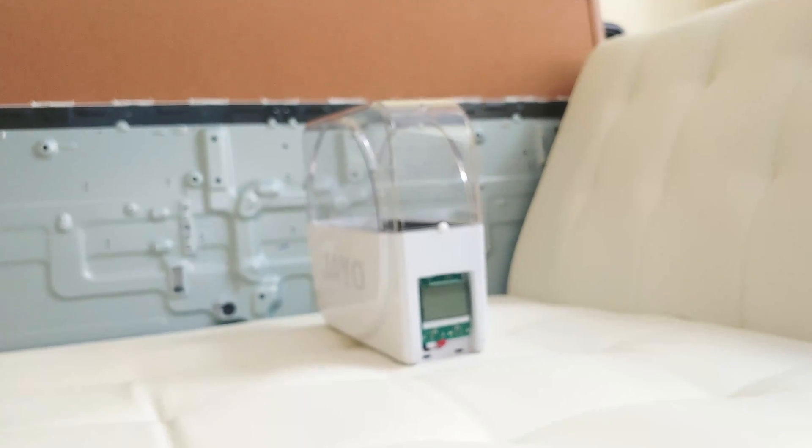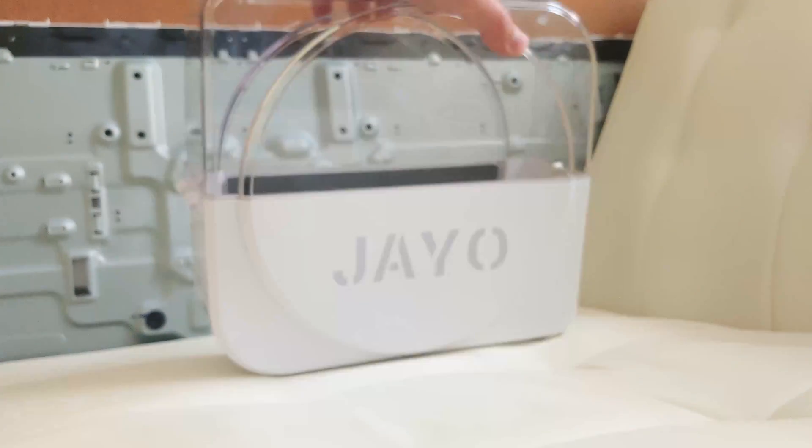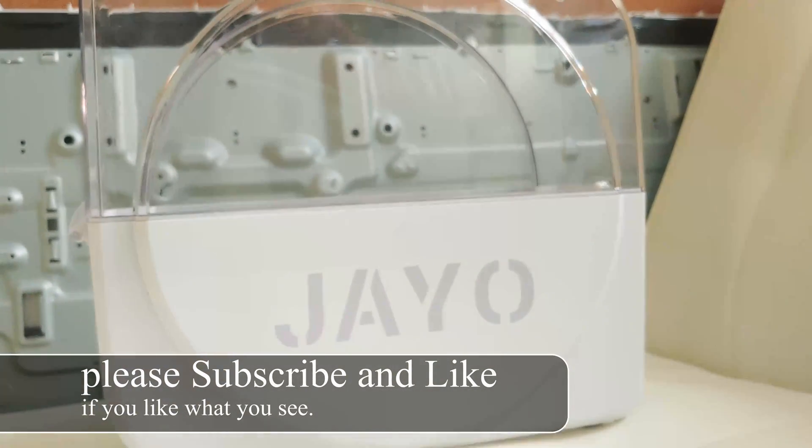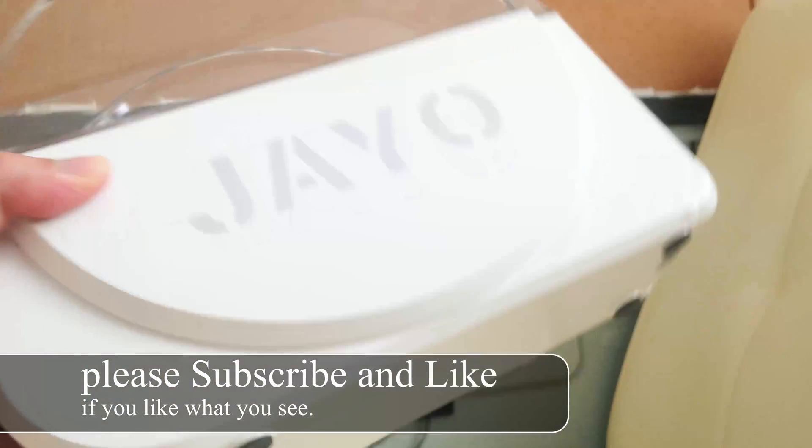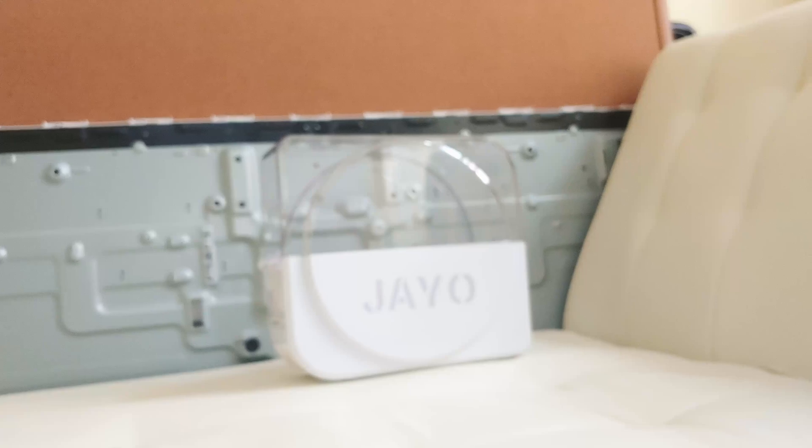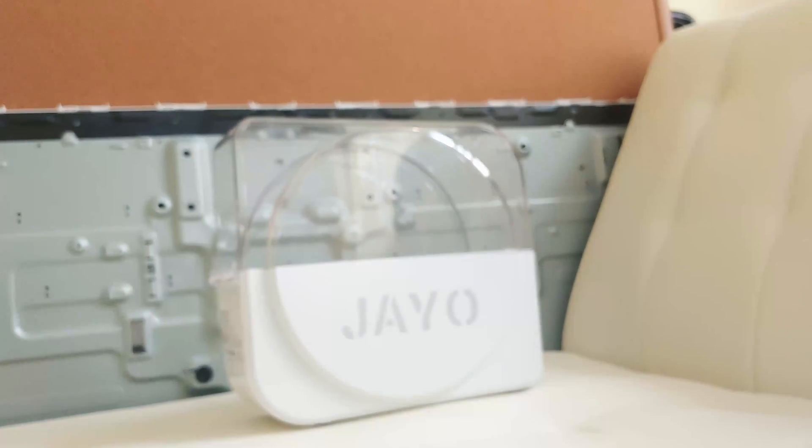This is the quick overview of the JAYO filament dryer. It is identical to the Sunlue S1 dryer. In fact, if you look at the bottom you will see there's a sticker for Sunlue. Because it is identical to the Sunlue, the problems are exactly the same.